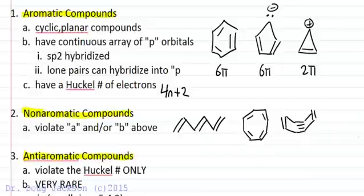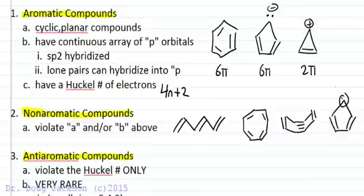You can also have an interruption in the cycle, such as the compound cyclopentadiene. The sp3 hybridized carbon in cyclopentadiene breaks up the cyclic array of p orbitals, making it non-aromatic.